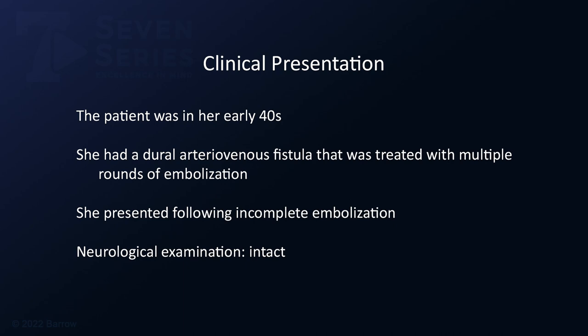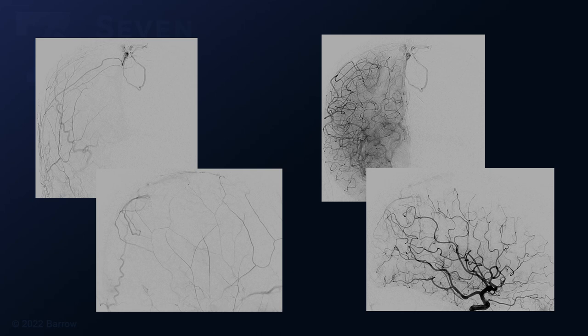On neurological examination, she was intact. Her angiographic images demonstrate a superior sagittal sinus dural AV fistula with retrograde cortical venous drainage into a small vein that appears to arise from the falx and course inferiorly, following a circuitous route back to the superior sagittal sinus.